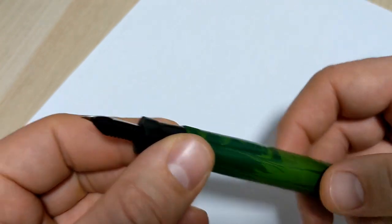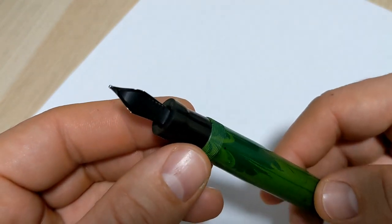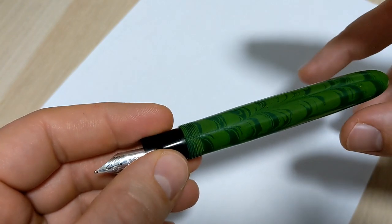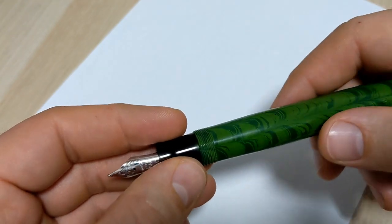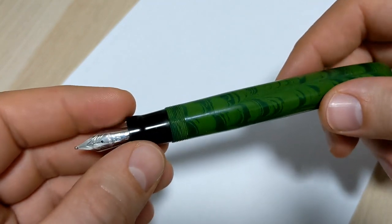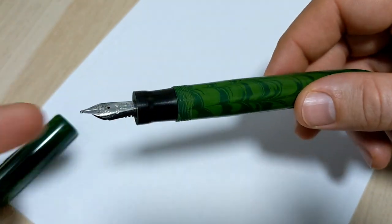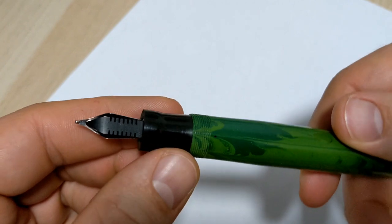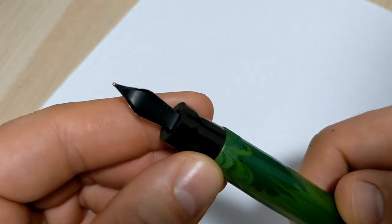This is an eyedropper, it's already inked. You would just unscrew this and you would see this thing is inked, but you don't need to see that. Big feed that goes right in. I believe it's an ebonite feed as well, looks like one, and that just makes so much sense.